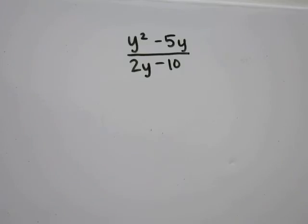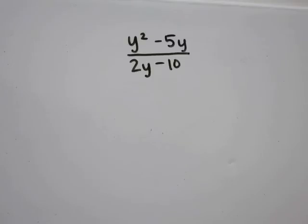Problem 13: y squared minus 5y over 2y minus 10. When asked to simplify a fraction, you want to look to see what can be factored out and or canceled. In the numerator, I can factor out a y.